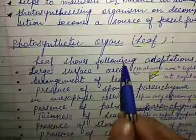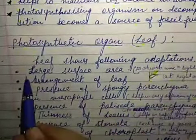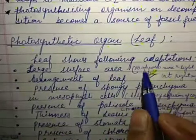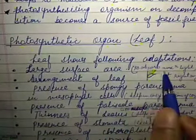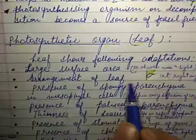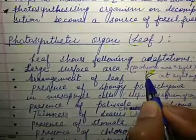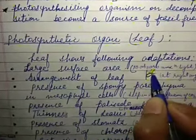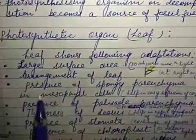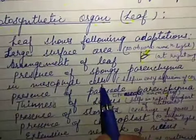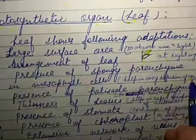Leaf shows following adaptations. The first one: leaf's large surface area. It will help to absorb the maximum light. The second point: arrangement of leaves. The leaves are arranged at the right angle so the maximum area of the leaves will be exposed to the sunlight. The third point: presence of spongy parenchyma in mesophyll cells. This will help in easy diffusion of carbon dioxide.